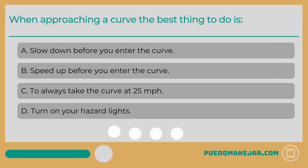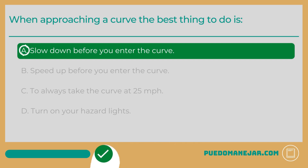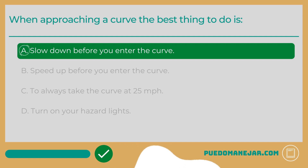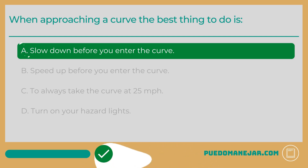When approaching a curve, the best thing to do is: A. Slow down before you enter the curve. B. Speed up before you enter the curve. C. Always take the curve at 25 miles per hour. D. Turn on your hazard lights. The answer is A — slow down before you enter the curve. Apply your brakes and reduce your speed before entering the curving section of road. Once in the curve, you can accelerate through it as necessary. Taking a curve too fast or braking too hard within the curve can create a dangerous situation.